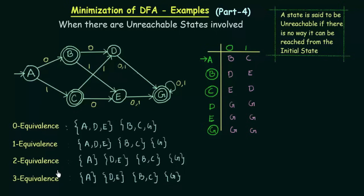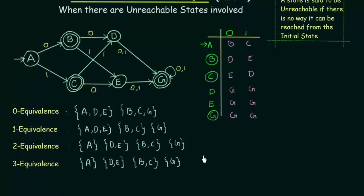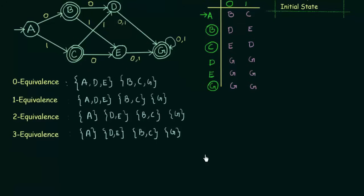If you observe carefully, you can find that the rows of two equivalence and three equivalence yield the same result. Since they are the same, it is time to stop the procedure. These are the states that I have to make in my minimized DFA. Let me draw the transition table for the new minimized DFA.